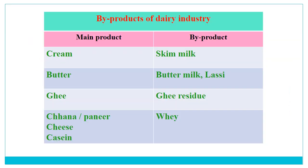Here we can see the list of main products and byproducts from the dairy industry. When we make cream, we get skim milk as byproduct. When we make butter, we get buttermilk or sometime lassi due to the desi method. From ghee preparation we get ghee residue. From channa and paneer we get whey. Similarly from cheese or from casein making we can also get whey.